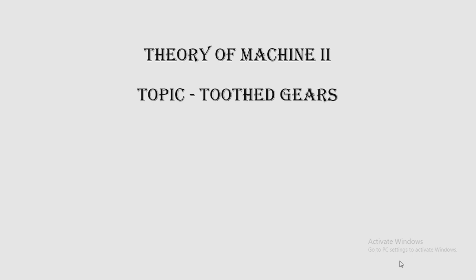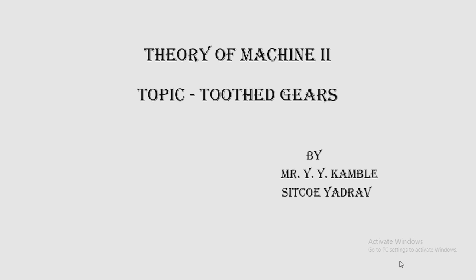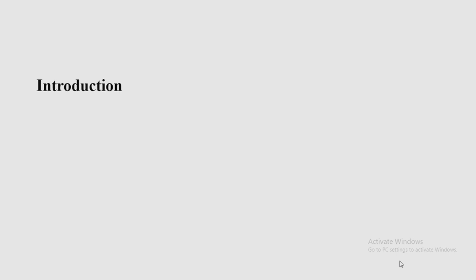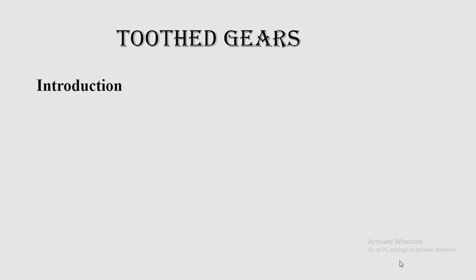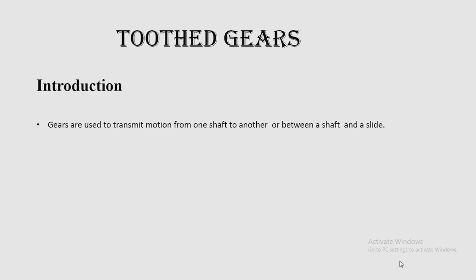Hello students, today we are going to see the subject Theory of Machines, second unit, topic number two — toothed wheels, or simply gears. I am Mr. Y.Y. Kamri from Shahad Institute of Technology, College of Engineering, Edra. Introduction: gears are used to transmit motion from one shaft to another, or between a shaft and a slide. This is the main use of gears.